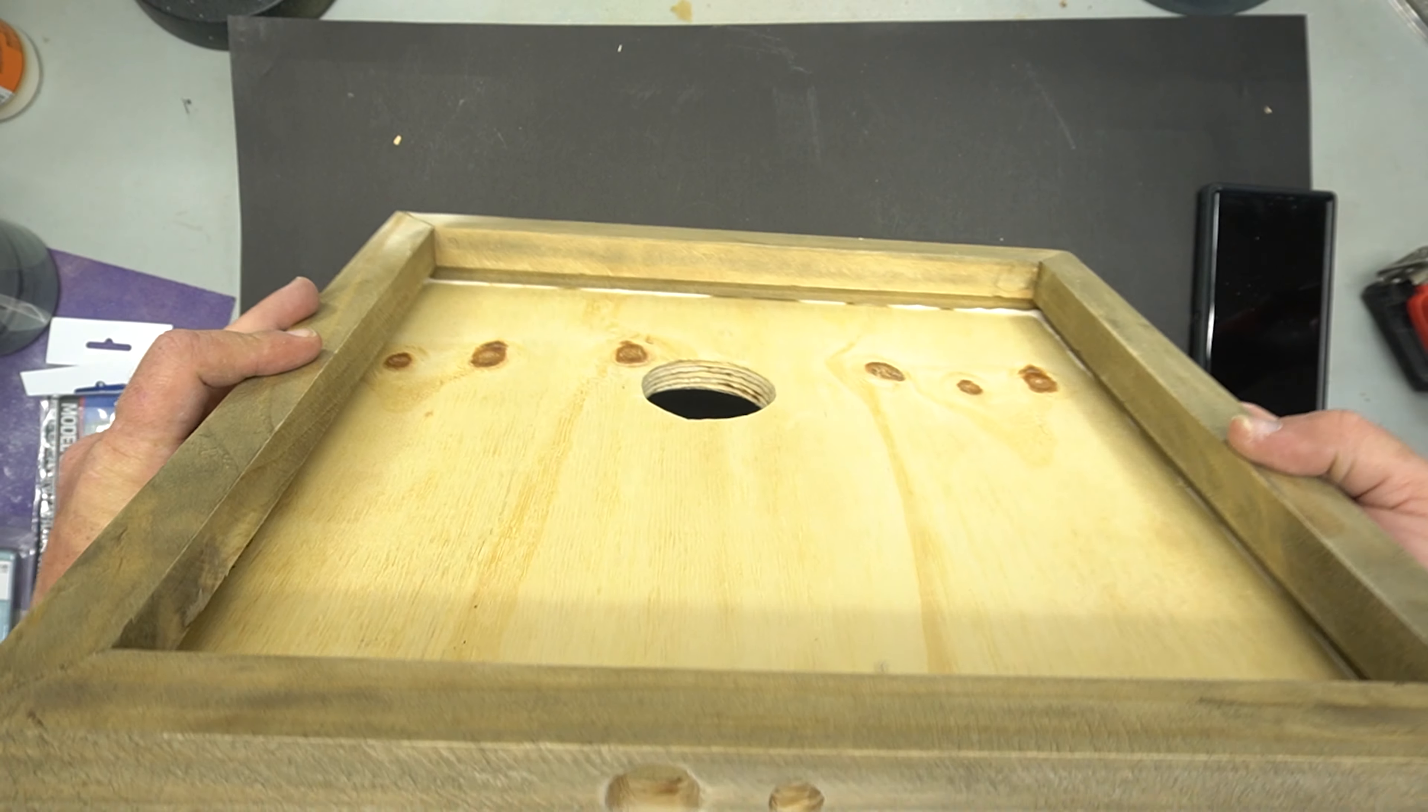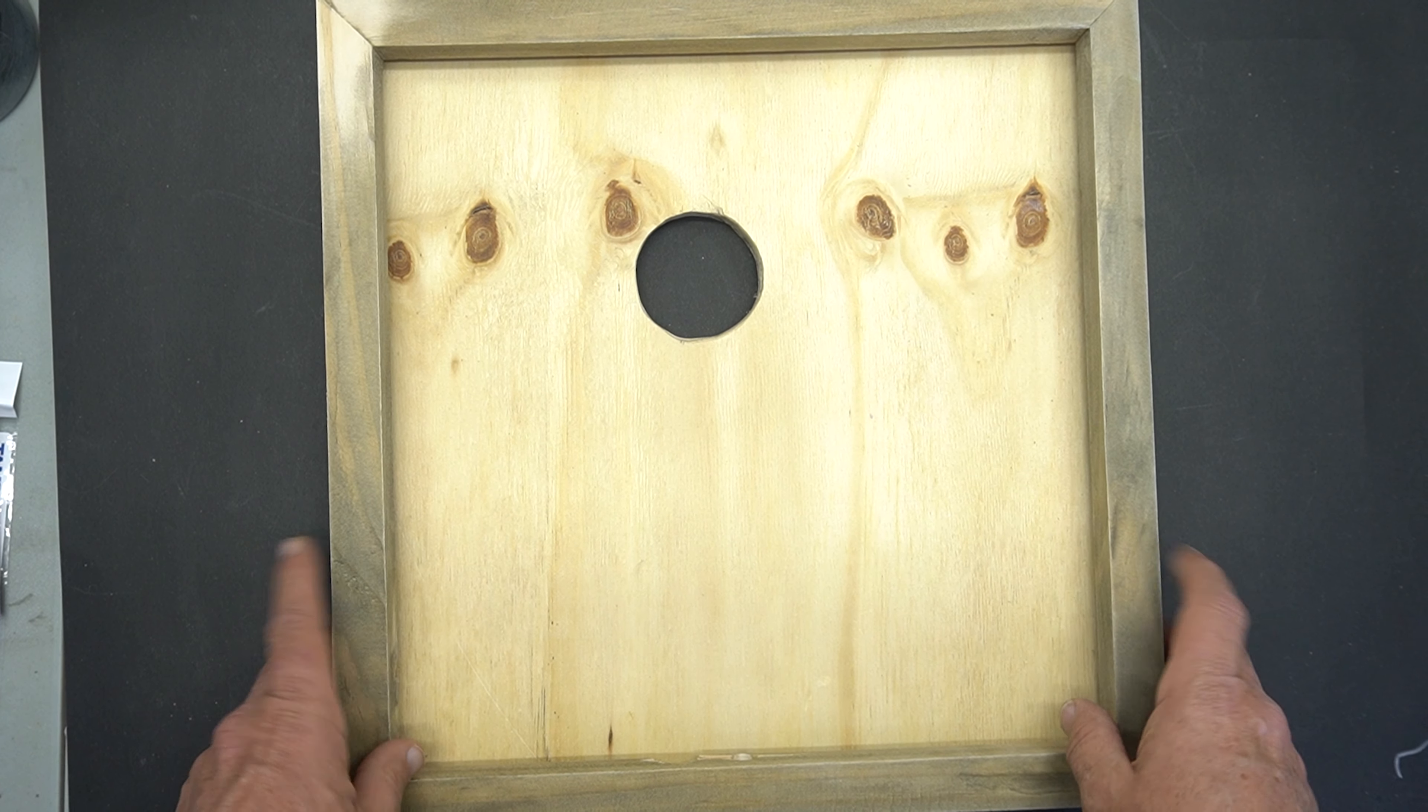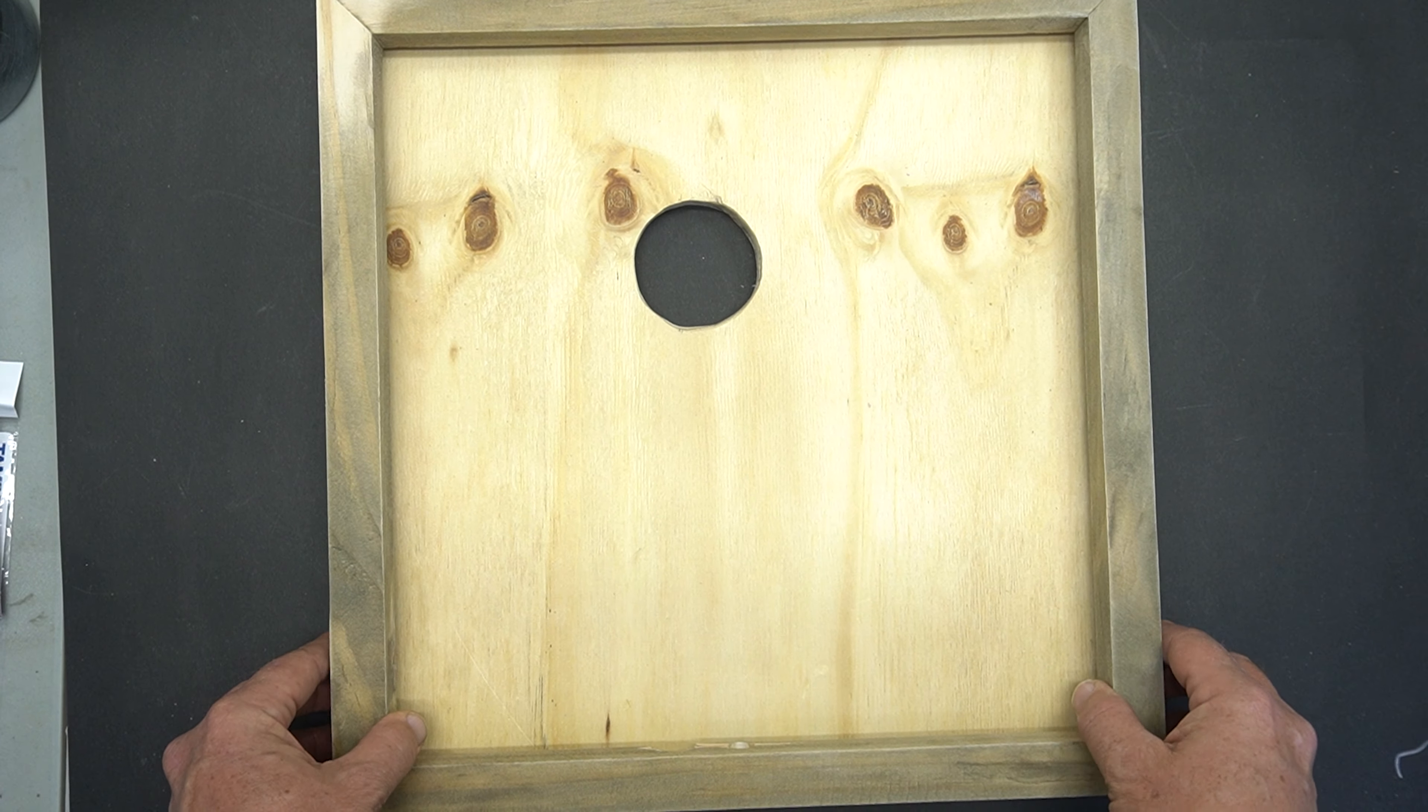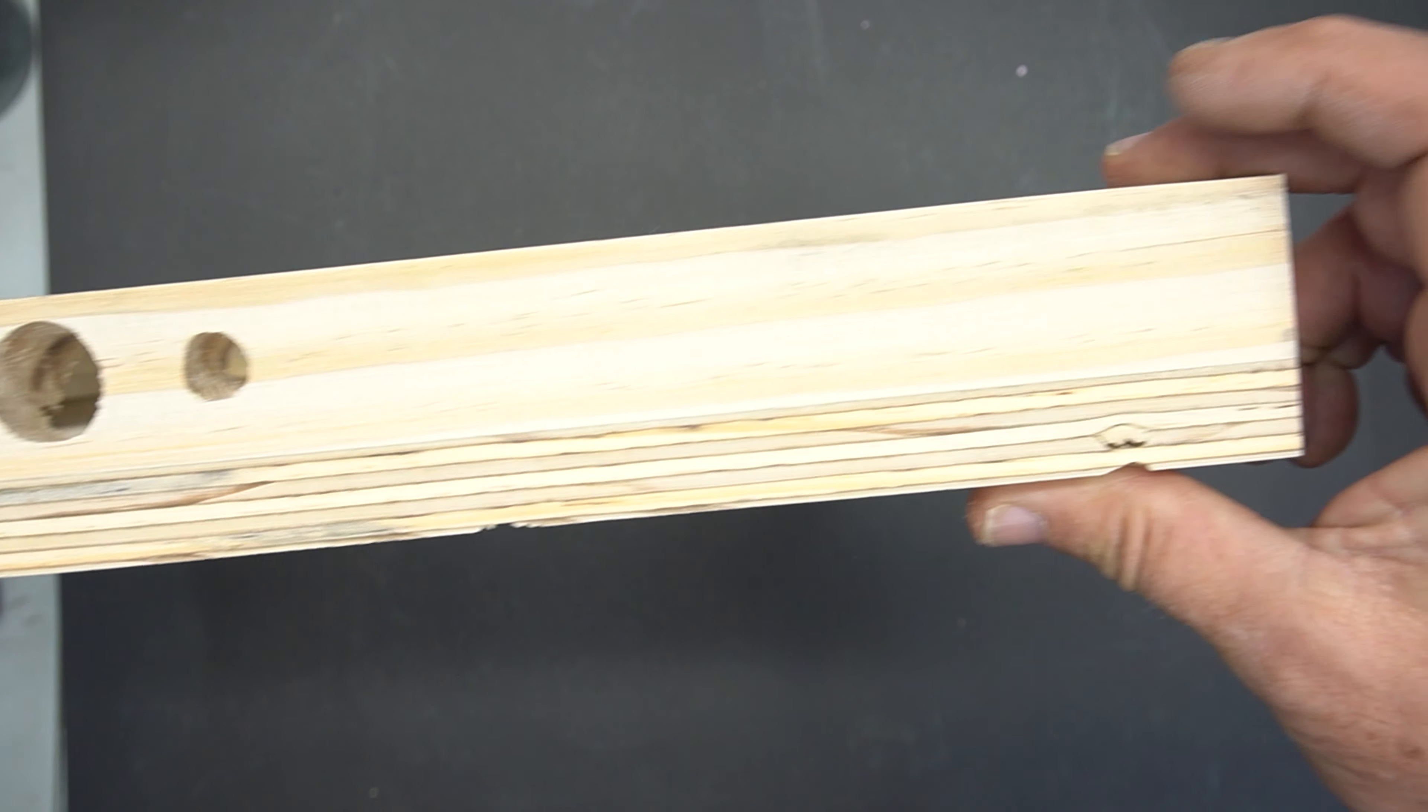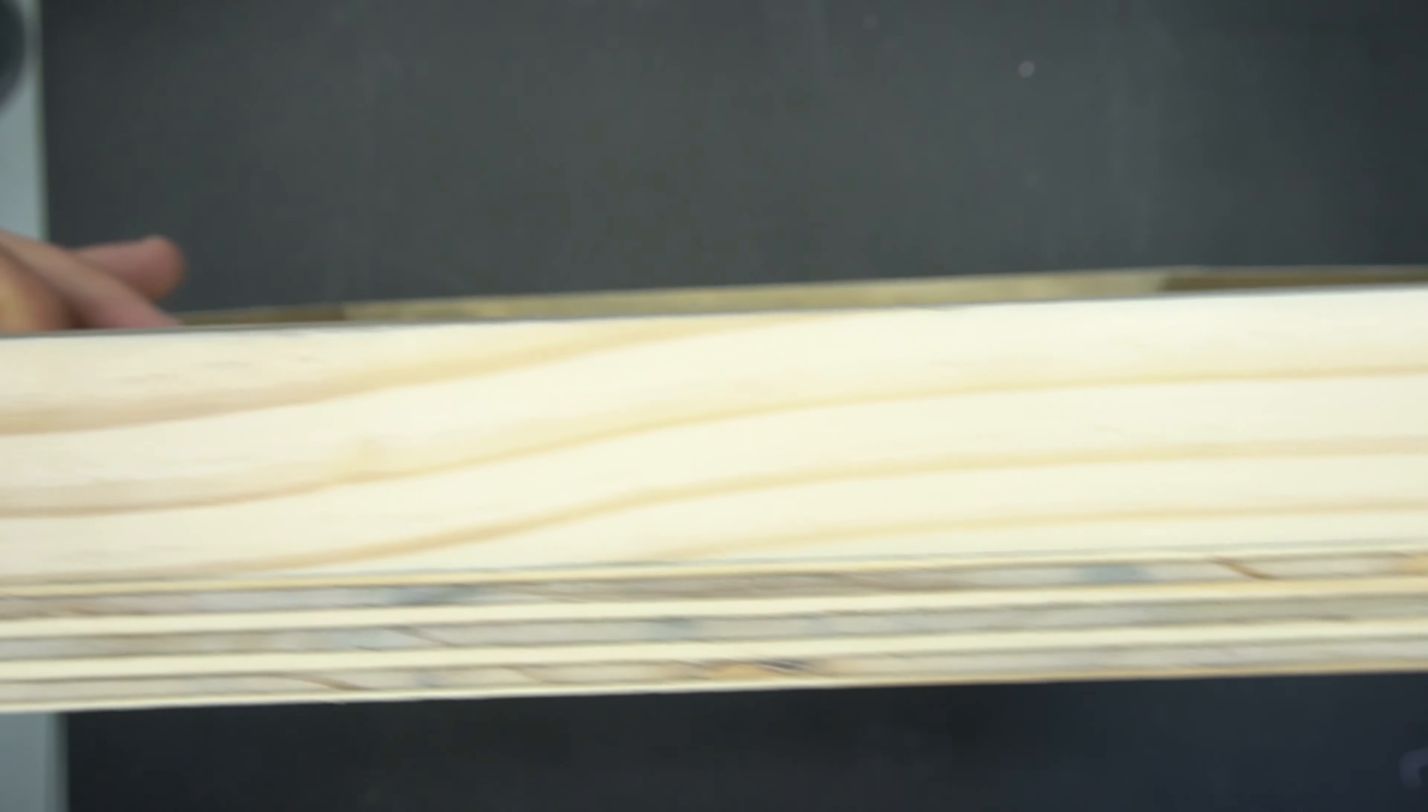Now the final step is just to pop a screw in each one of these holes to keep the frame tight to the three-quarter inch plywood. Now that everything's been screwed together and glued and clamped and set up, we're good to go to move on to the next stages of the build.